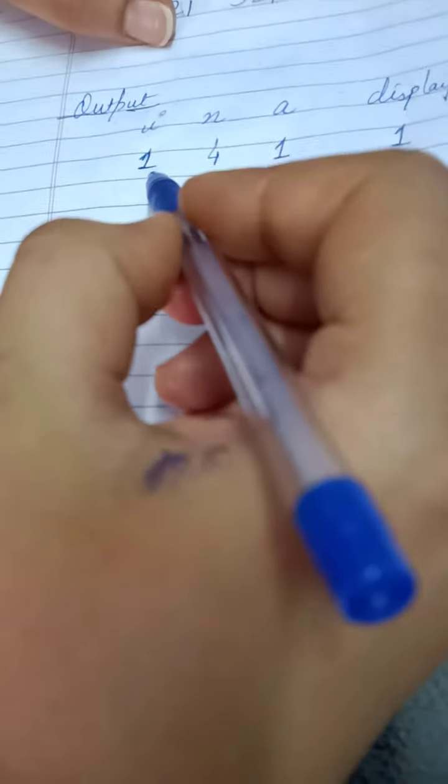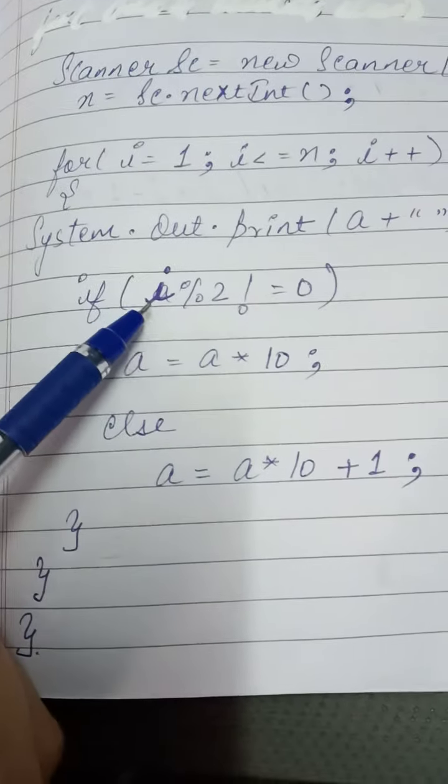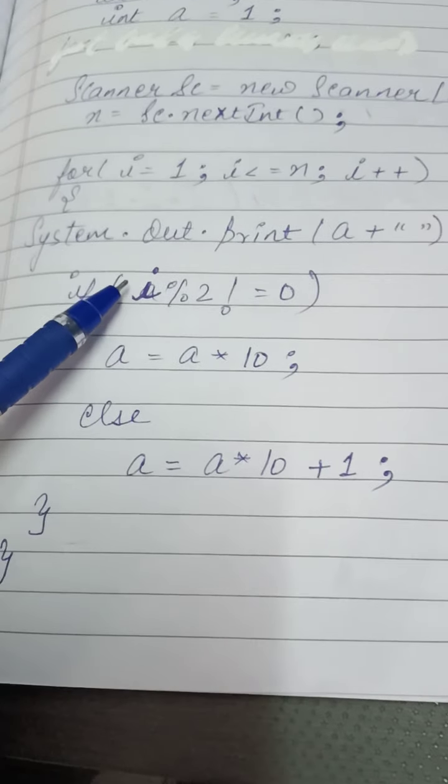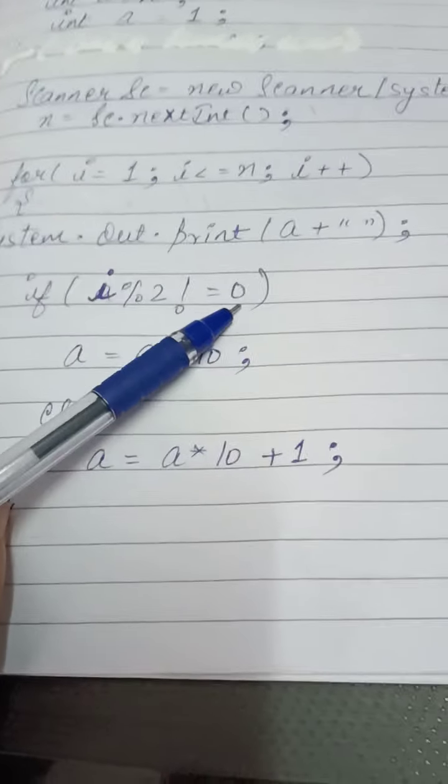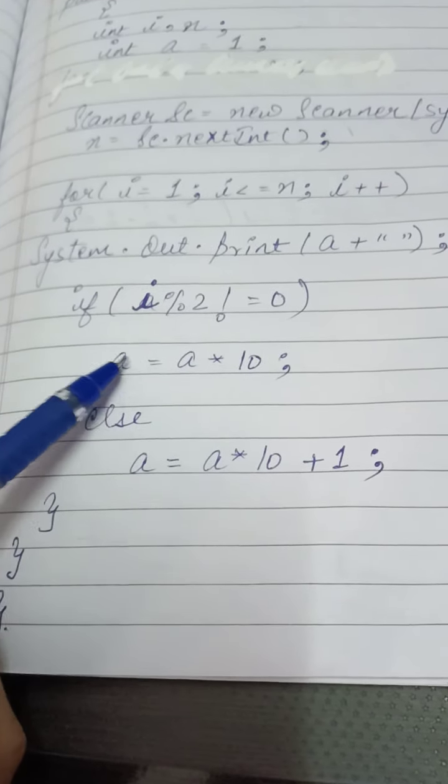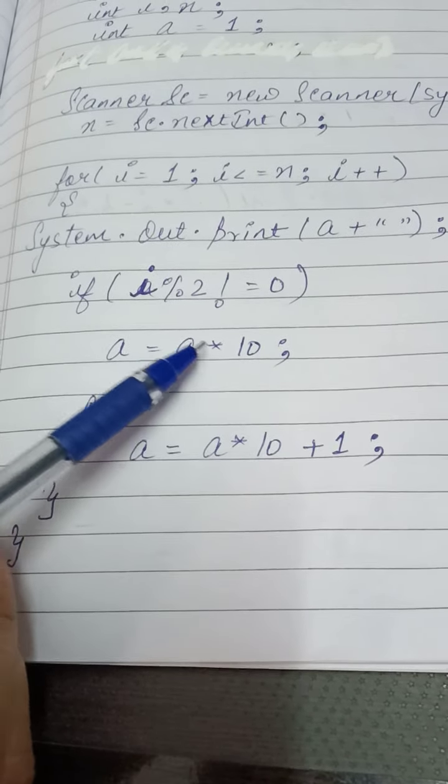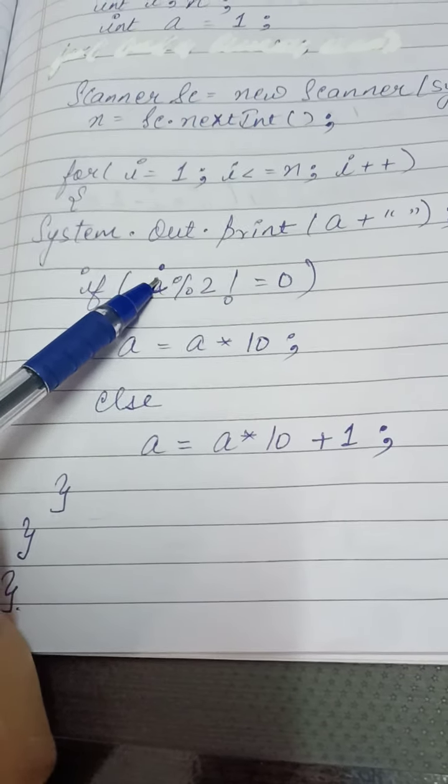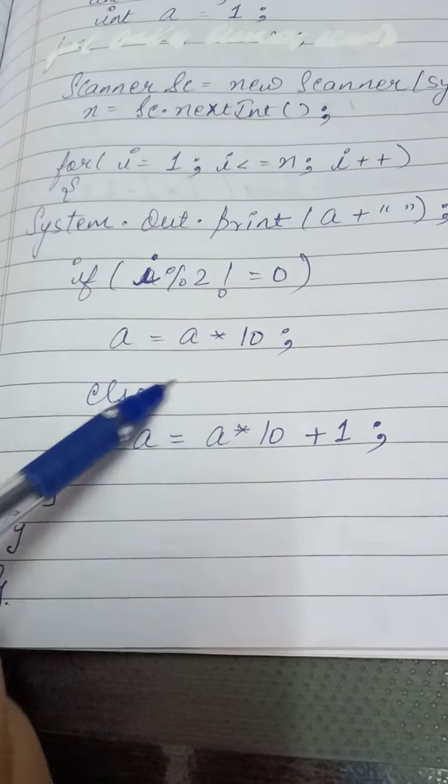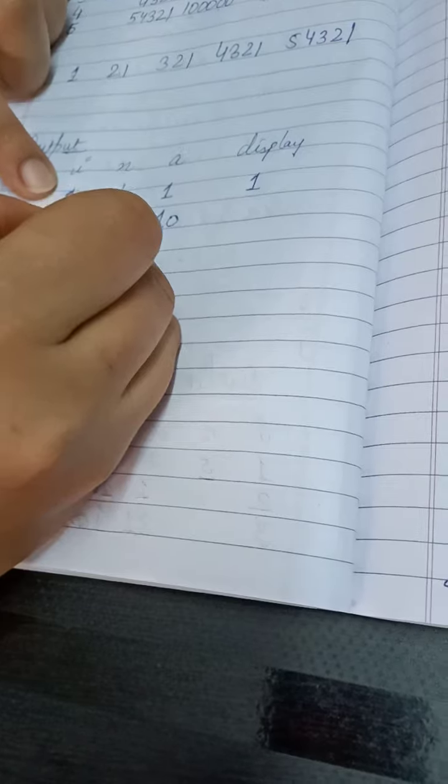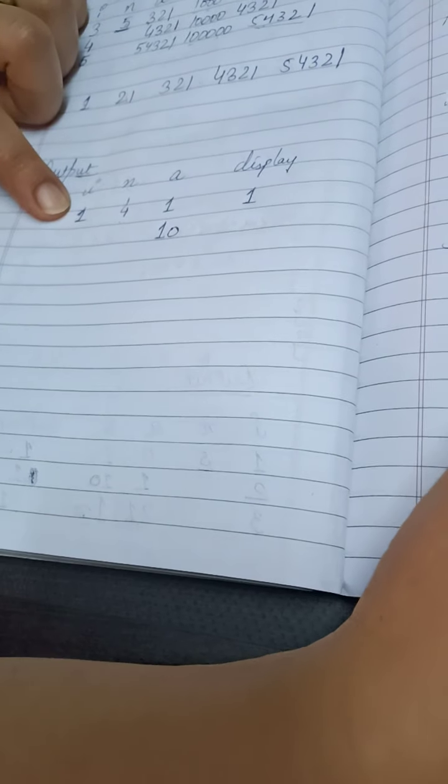Now it will go to your if condition. Now i 1 modulo 2 not equal to 0, condition is true. So the value of a was 1, now it will become 10. 1 into 10 is 10. That's why this statement will work. So now the value of a has become 10. n is constant and it will update. The value of i will update and it will become 2.